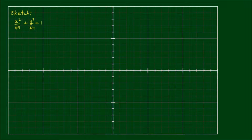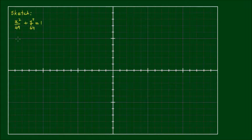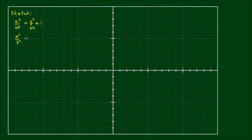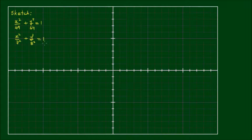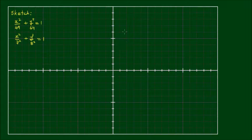Let's sketch the ellipse x squared on 49 plus y squared on 64 equals 1. The denominators of both terms can be expressed as square numbers, so we have x squared on 7 squared plus y squared on 8 squared equals 1. With y having the bigger denominator, we've got a semi-major axis of 8.